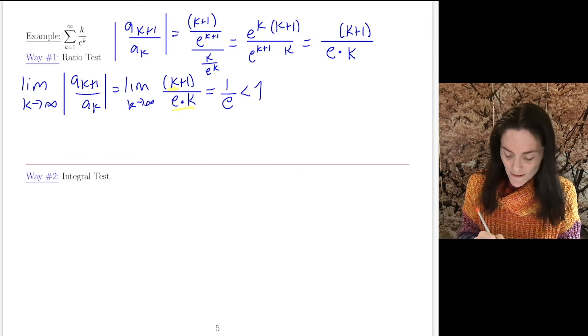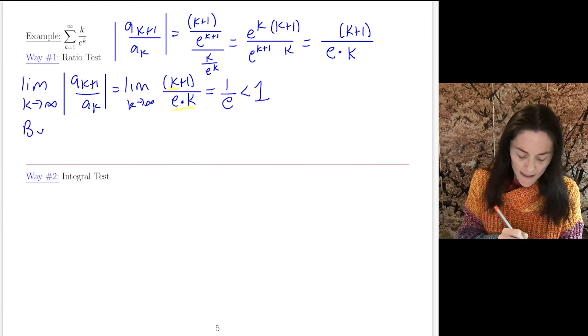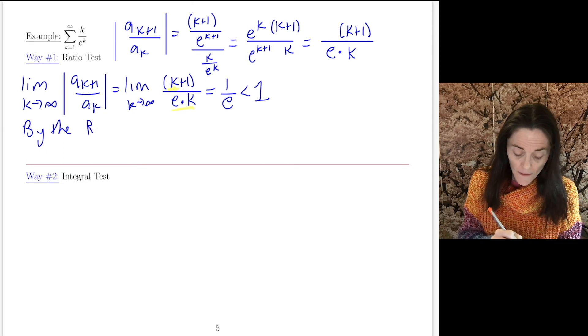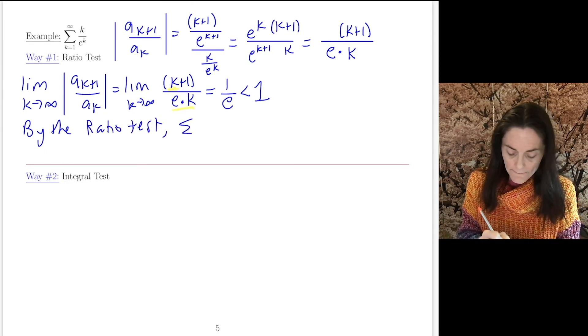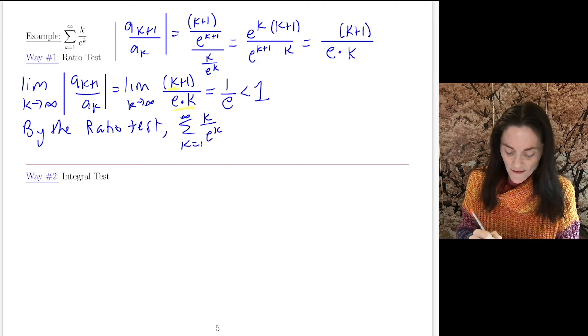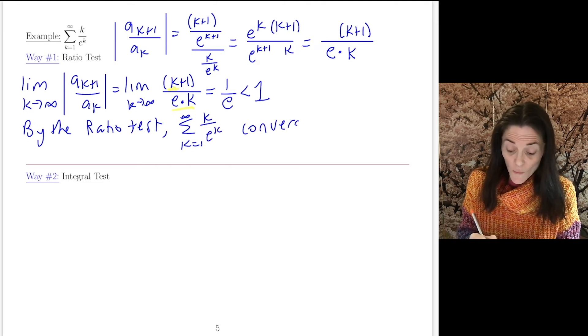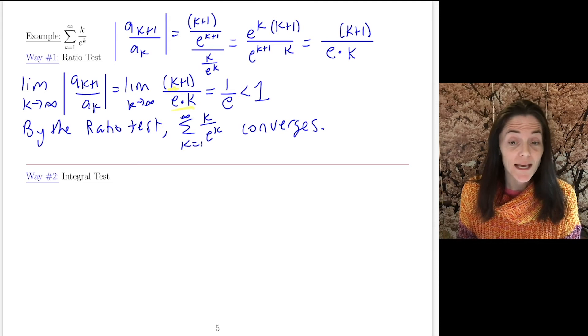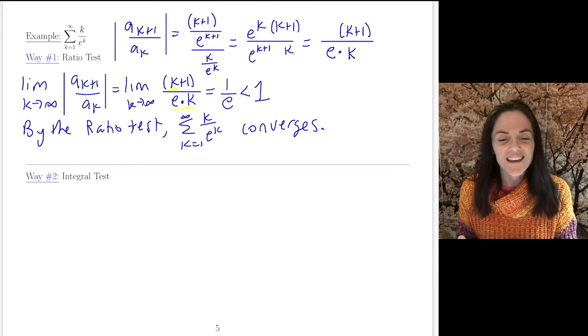This is less than 1. So by the ratio test, the series converges. So we got converges by the ratio test. Now, we can also use the integral test.